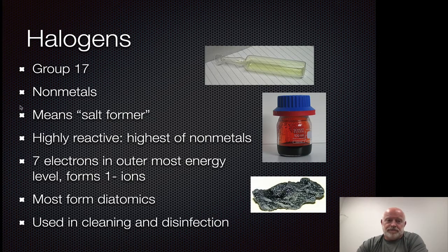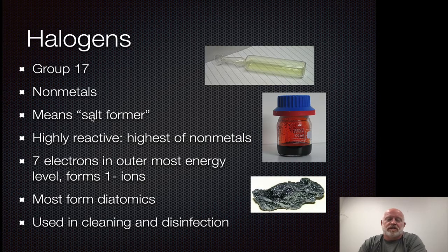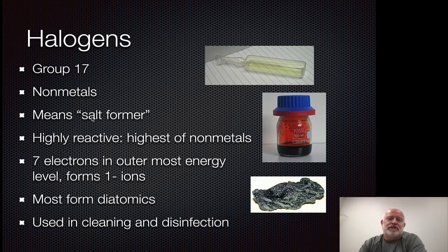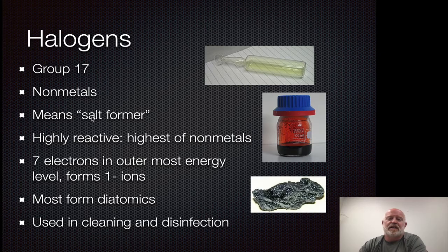Taking a look at the halogens, the term halogen actually means salt former. Originally, when we talked about salts in chemistry, anything that formed compounds with halogens we considered salts. Now that definition has changed a little bit — if you say the word salt in common-day speech, you're thinking of sodium chloride, like table salt. But really, you can have other salts that have halogens in them. We still kind of use that idea, but it's just not as formal as it used to be.